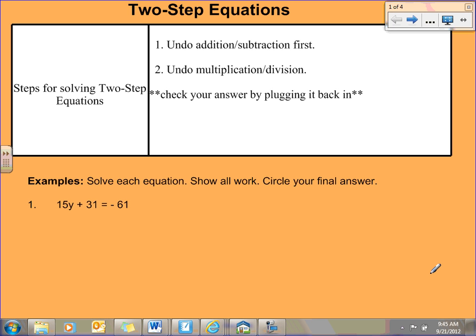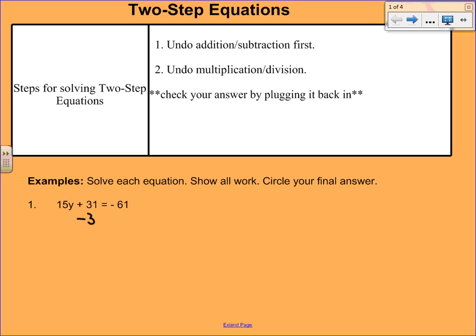In our first example, you'll see that we have 15y plus 31 equals negative 61. We have to undo addition first, so we're going to start by doing minus 31 on both sides. It's important to line up your work and show that you're subtracting 31 on both sides.